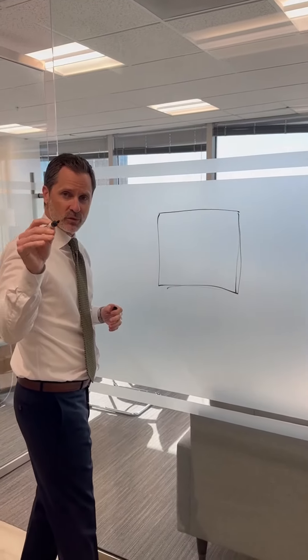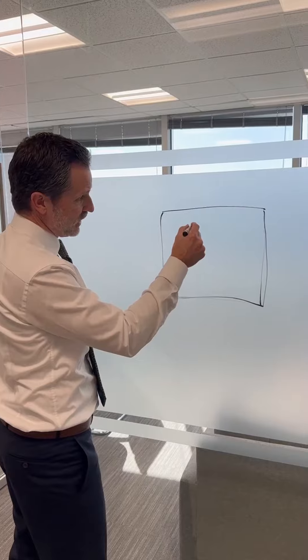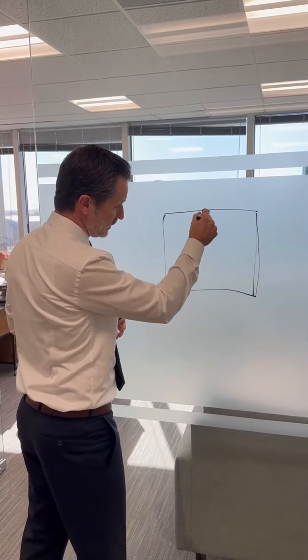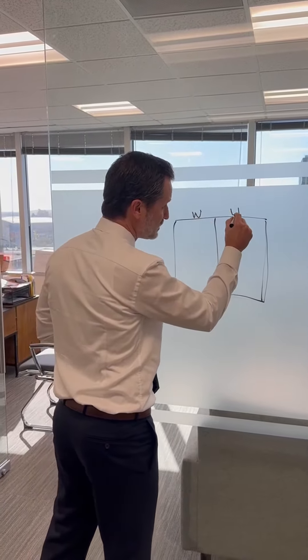When you're meeting with your divorce attorney, this is what your divorce attorney is going to say. This is your asset board right here. They're going to say, look, we're going to split this in half. We're going to put the wife here. We're going to put the husband here.